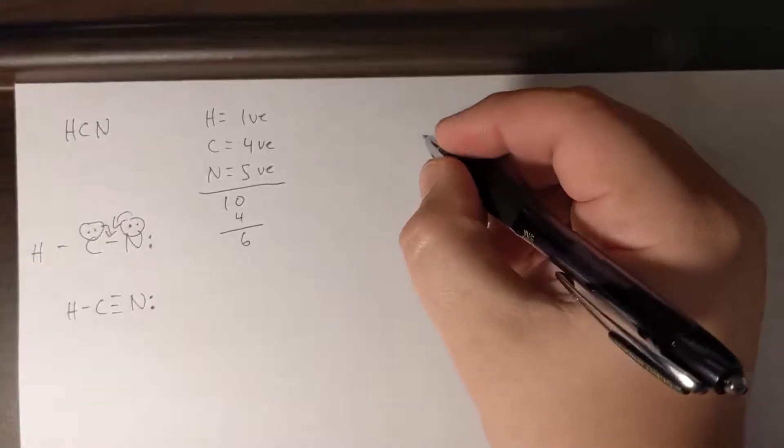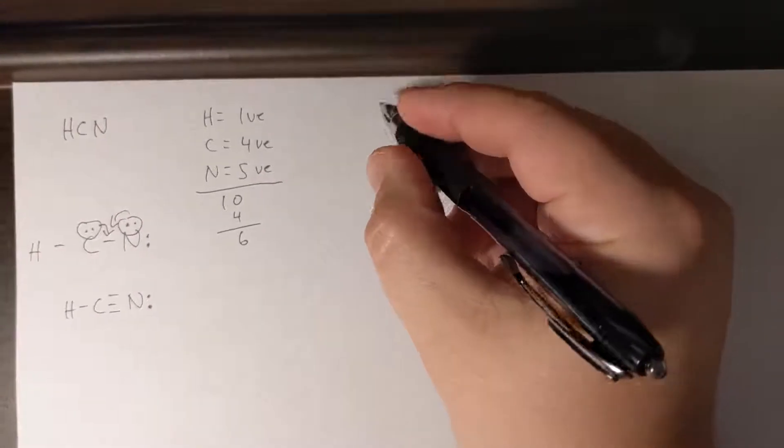Now we have two different bonds that we have to consider, and when we calculate the bond polarity it doesn't matter if it's a single, double, or a triple bond. We still just take the difference in the electronegativity.